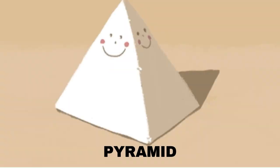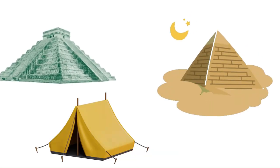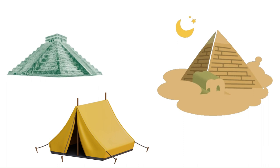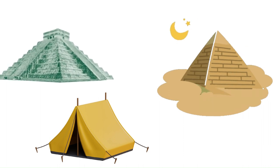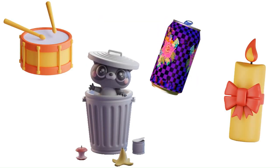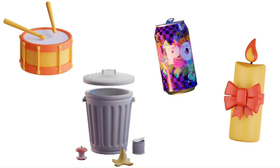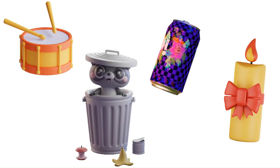This 3D shape is called a pyramid. The tent, Chichen Itza, and the pyramid of Giza are all pyramids. This 3D shape is called a cylinder. The drum, the trash can, the soda can, and the candle are all cylinders.